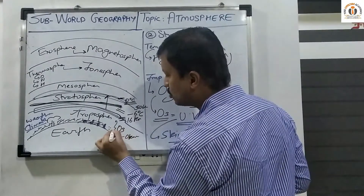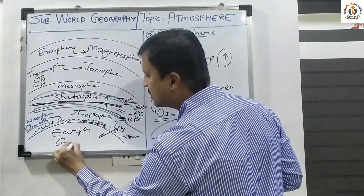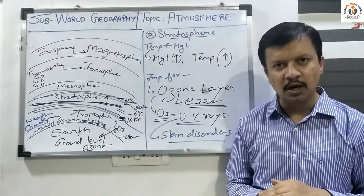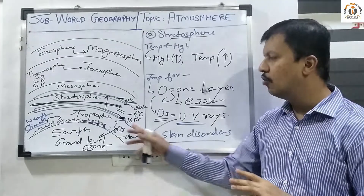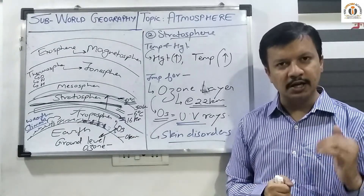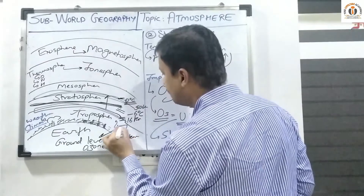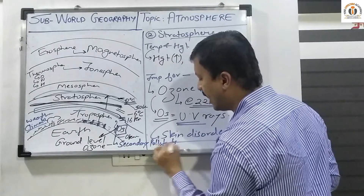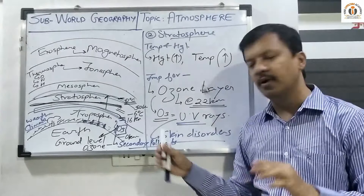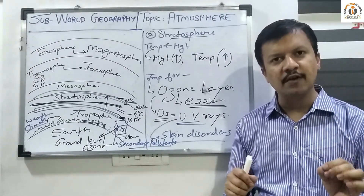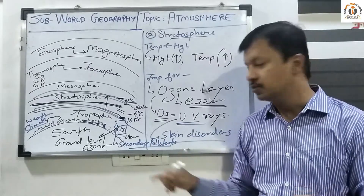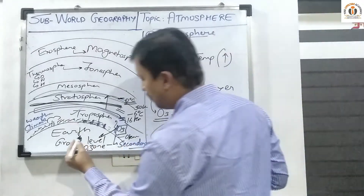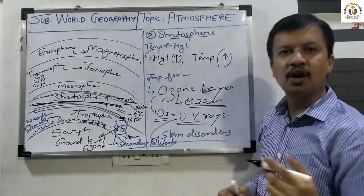The ozone formed in the troposphere is called ground level ozone. Ground level ozone is very harmful for human beings — it causes respiratory disorders. Ground level ozone is caused because of pollutants reacting with sunlight. It is an example of secondary pollutants. Primary pollutants are formed naturally and act as pollutants once emitted, while secondary pollutants are formed because of a chemical reaction between two different pollutants.